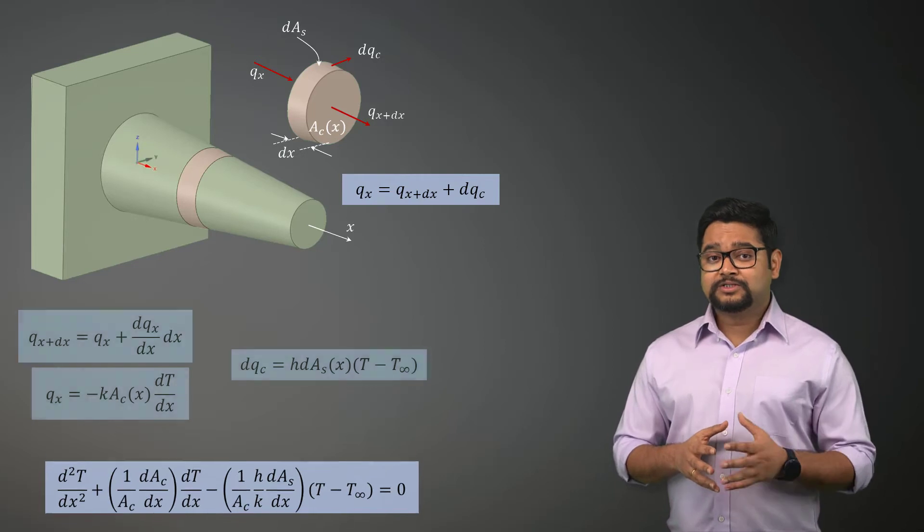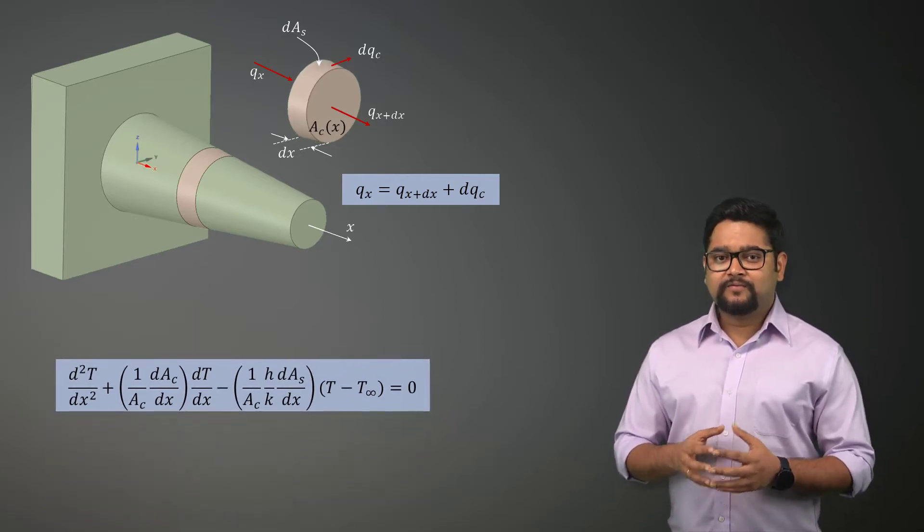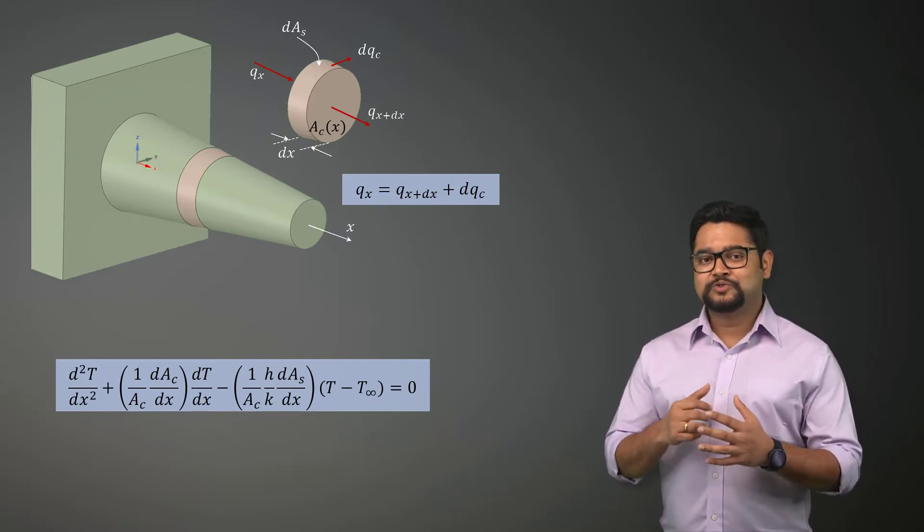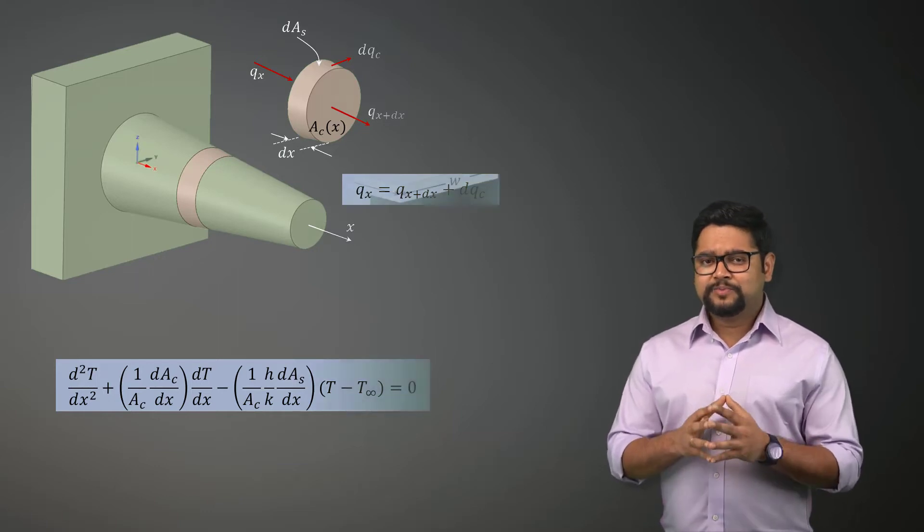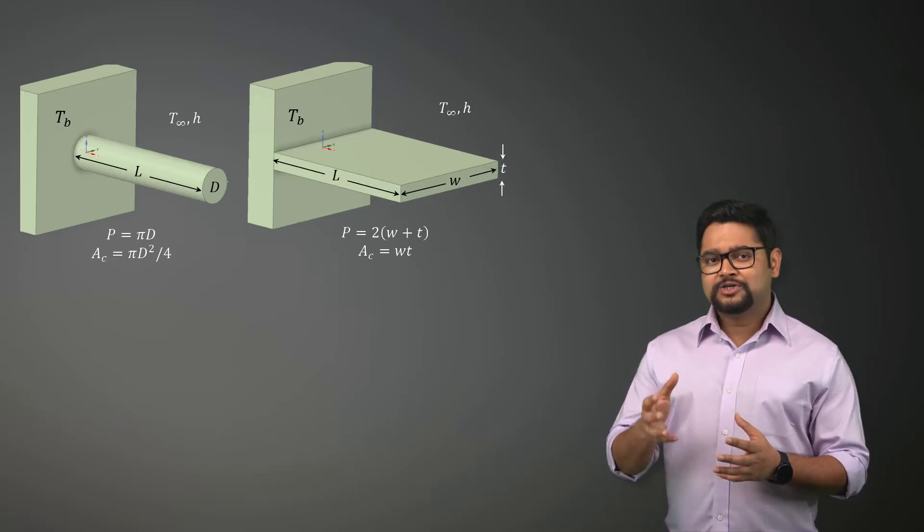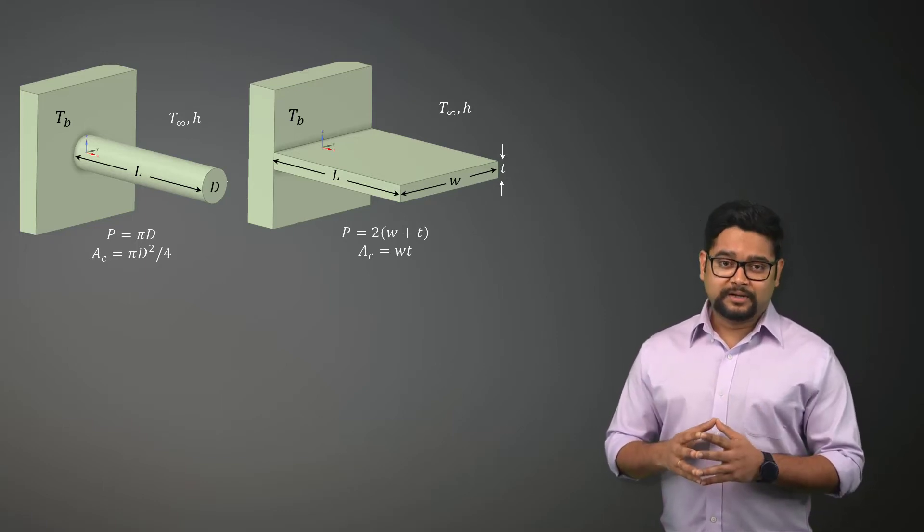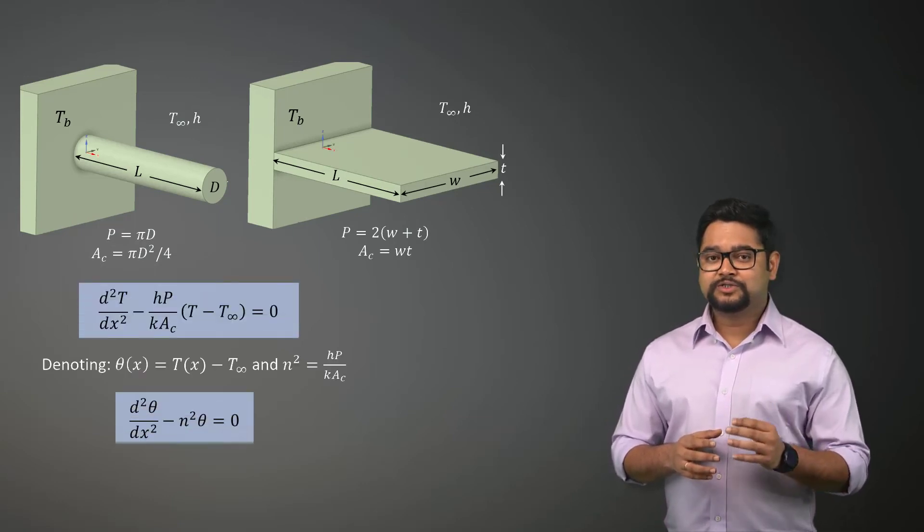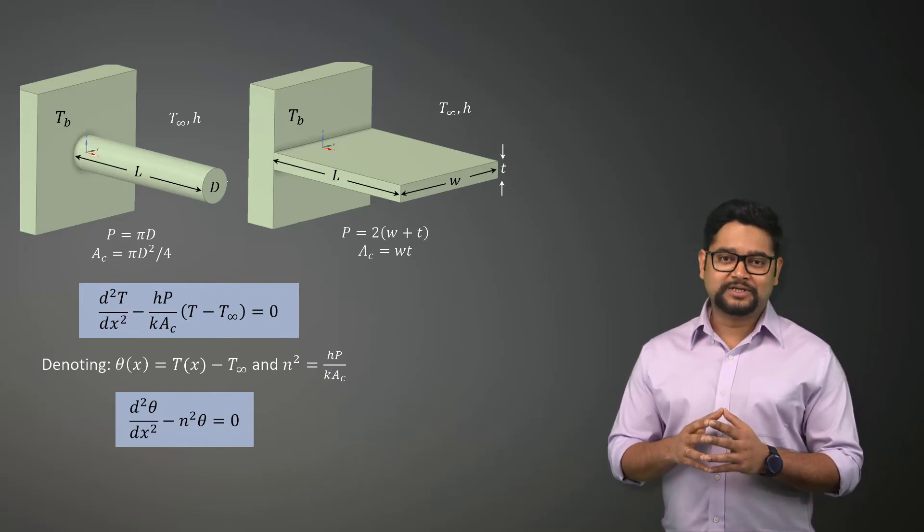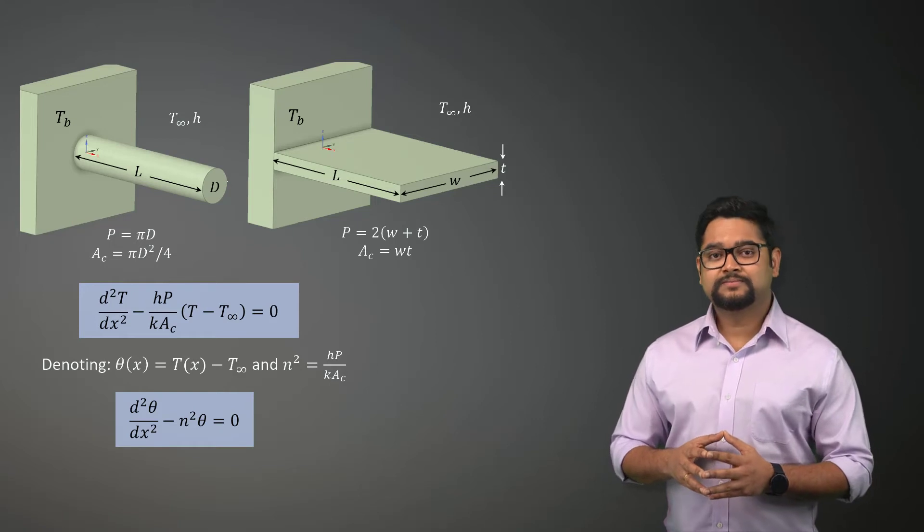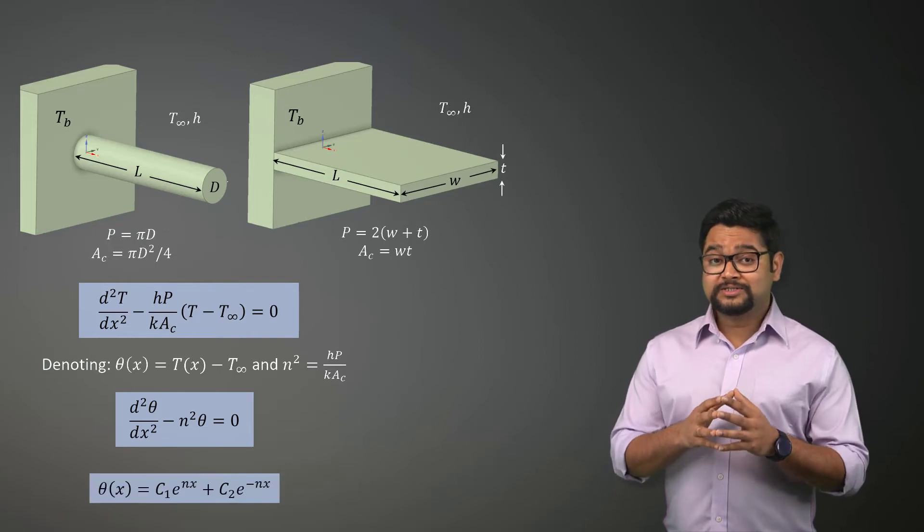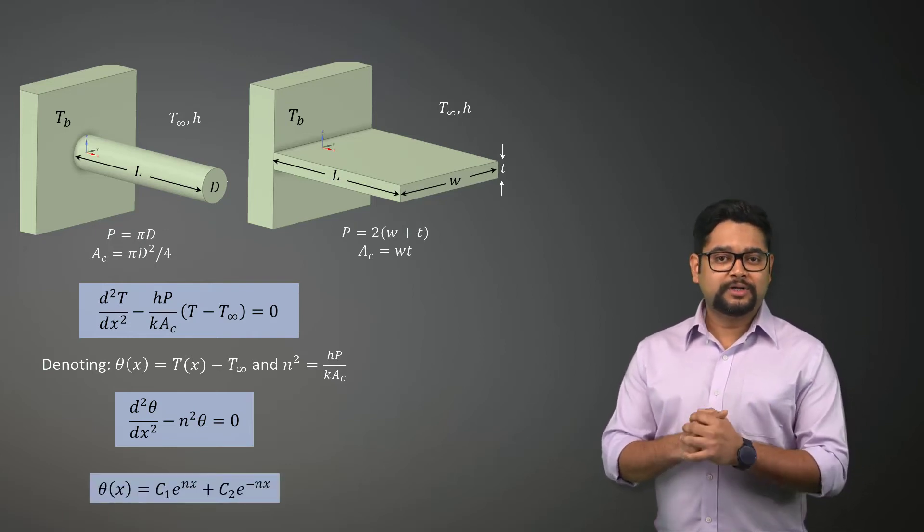In general, the cross sectional area Ac and the perimeter P of the fin vary with x, making this differential equation difficult to solve. However, in the special case of constant cross section such as rectangular plates or circular pins and constant thermal conductivity, the differential equation reduces to this. This is a linear homogeneous second order differential equation with constant coefficient. The general solution of this equation is shown here, where the constants c1 and c2 are determined using the boundary conditions.